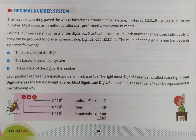There is a mathematical aspect to decimal numbers. Each position represents a specific power of the base 10. The right-most digit is called the least significant digit — the digit in the unit or ones place. Whereas the left-most digit is called the most significant digit. For example, the number 547.